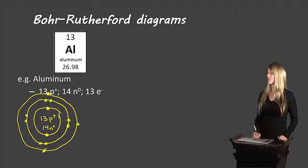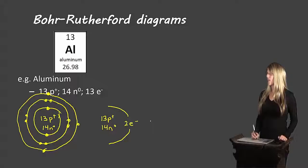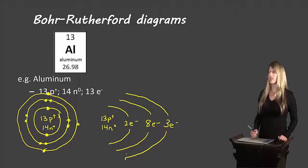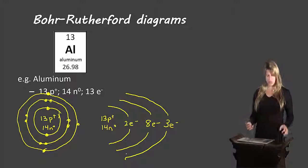Now here's our alternative way of writing it. The 13 protons and 14 neutrons. Two electrons fit in the first shell. Eight electrons fit in the second shell. And three electrons fit in the third shell. So we can draw it like that as well. So those are our two versions.